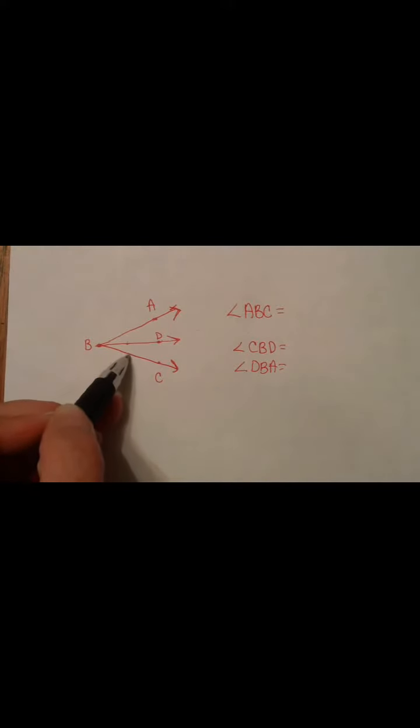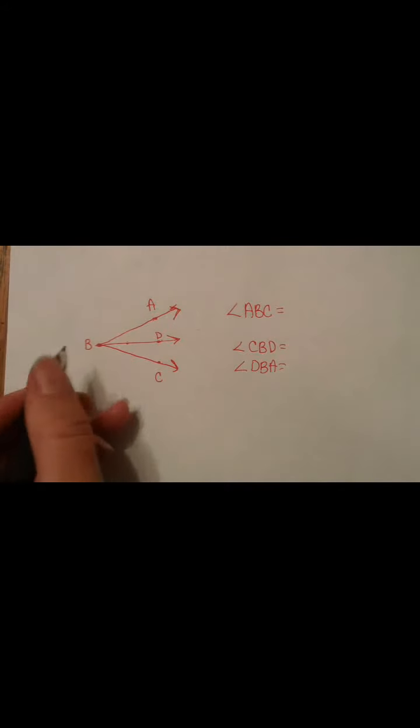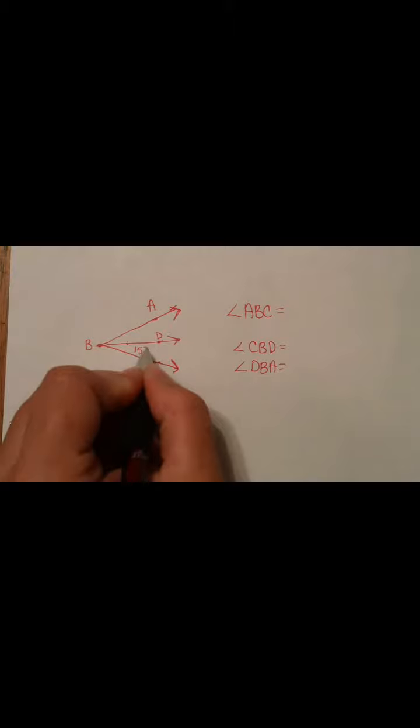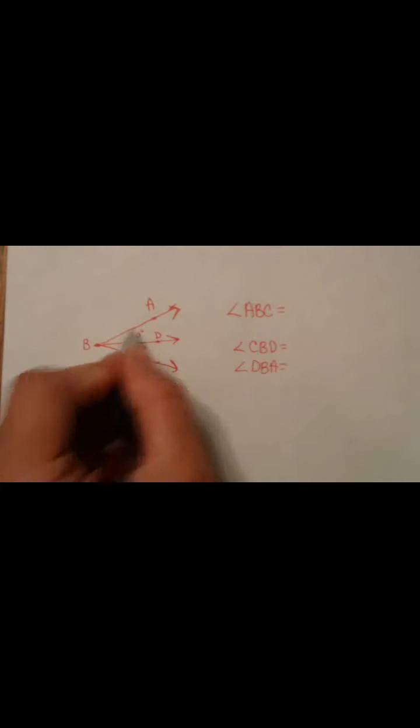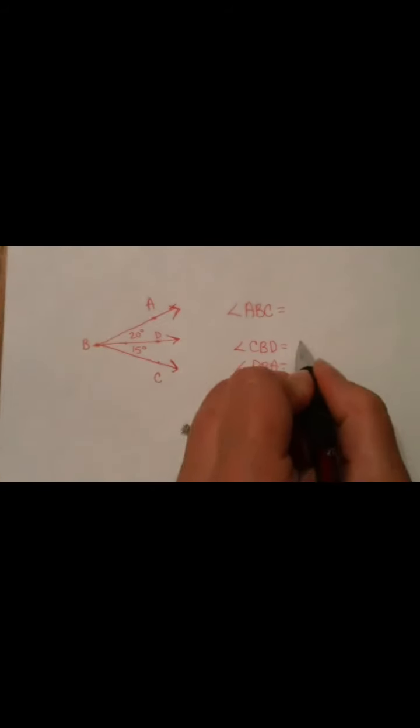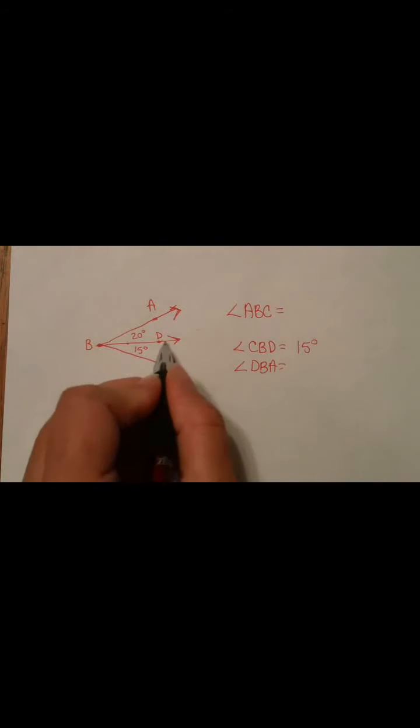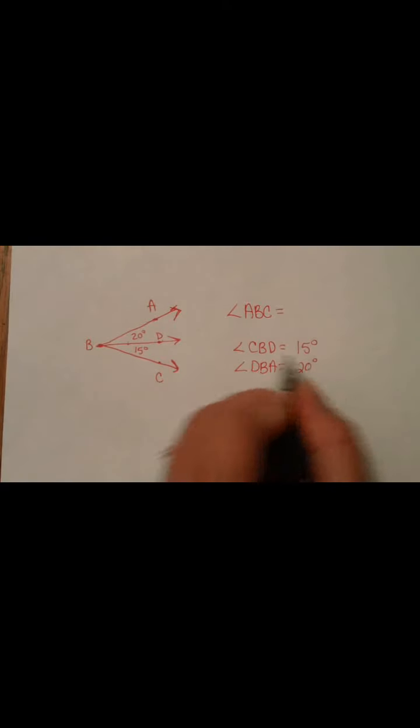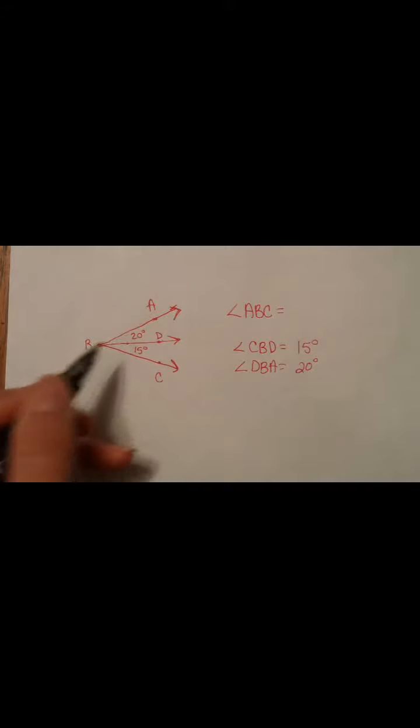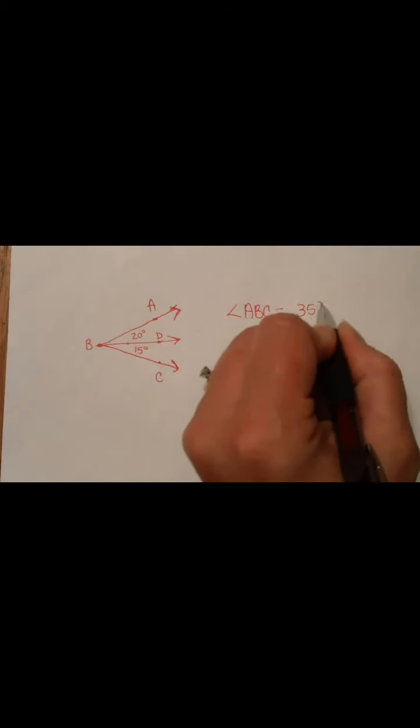So, let's say that this angle is 15 degrees and this angle is 20 degrees. Well, Angle CBD is 15 degrees and Angle DBA is 20 degrees. So, how much does the whole angle equal? Well, we go 15 degrees and we go another 20 degrees. We're going to get 35 degrees.